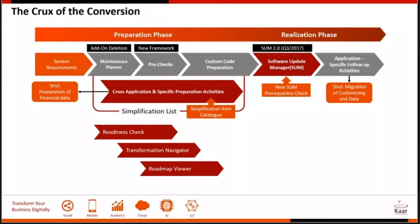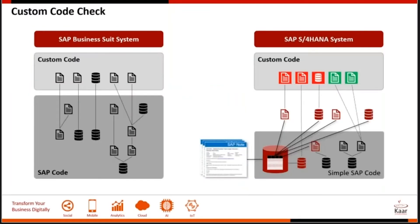So why do we really need these custom code checks? Traditionally, we've been building a lot of extra code on ECC, on the ABAP. It really helped us because we could put things that were not available in S4 and build it the way we wanted. The approach was good so far, but the downside comes when you have to do the conversion, because the underlying data structure on ECC versus S4 is very different.